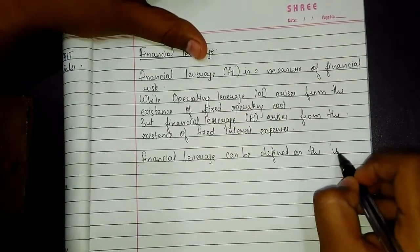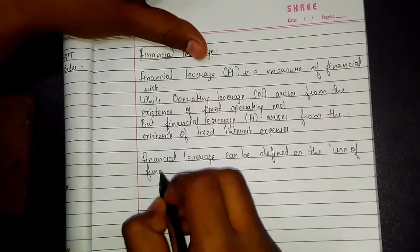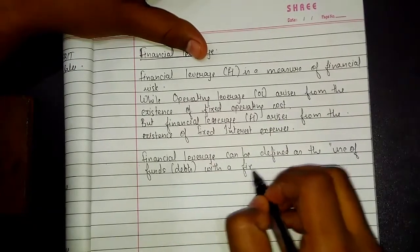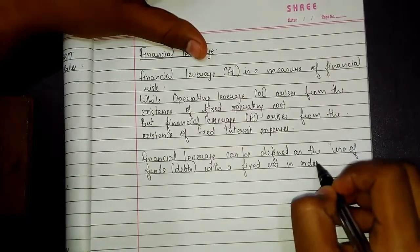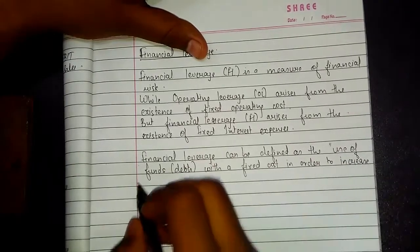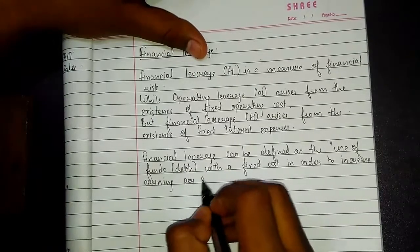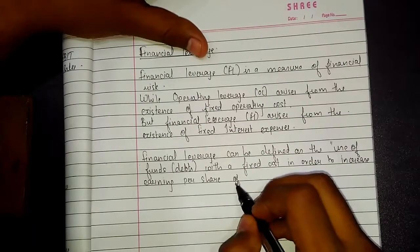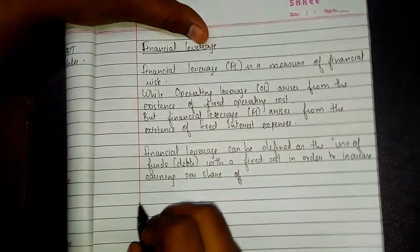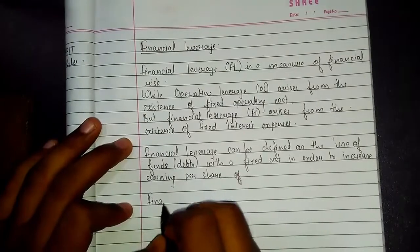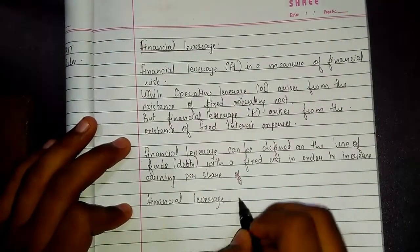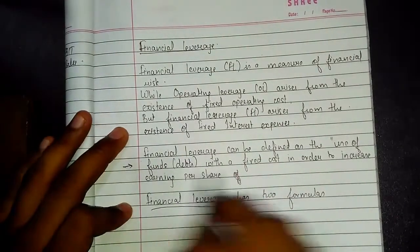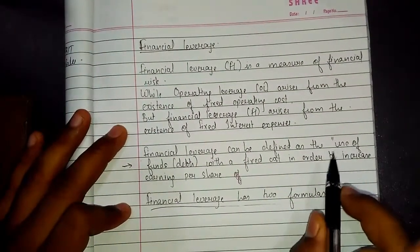Financial leverage can be defined as the use of funds — in brackets, debt — with a fixed cost, in order to increase earning per share (EPS). Financial leverage also has two formulas. This is a very important statement that you may come to understand very soon in the next chapter.